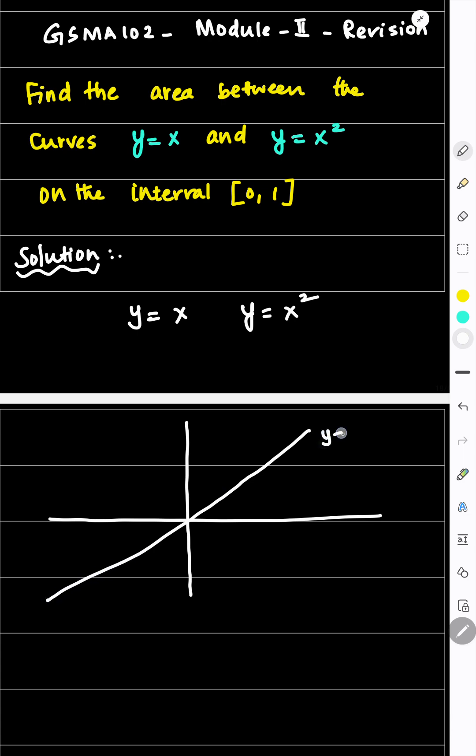This is y equals x. And y equals x square which is a parabola projecting upwards. So this is the curve x square equals y or y equals x square.